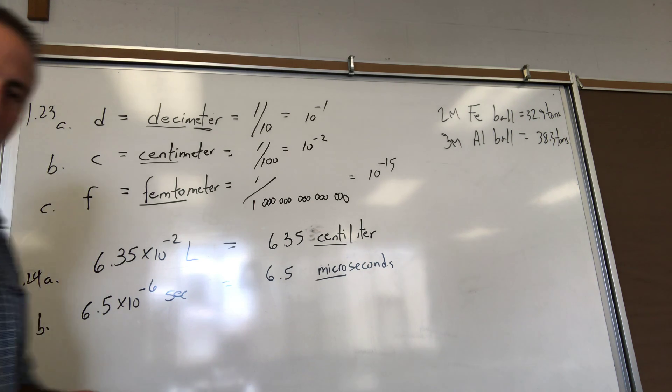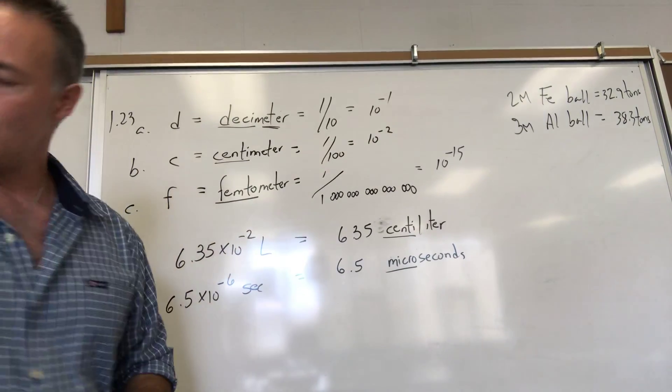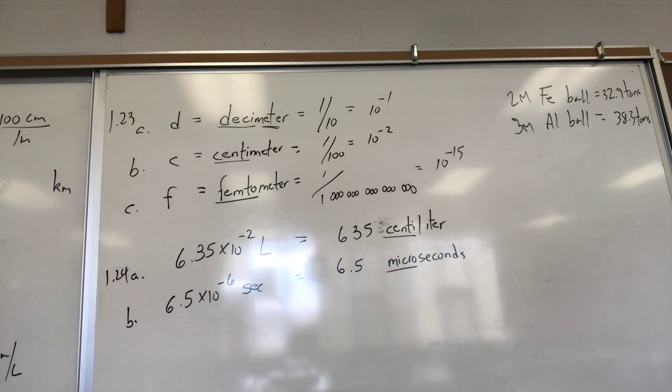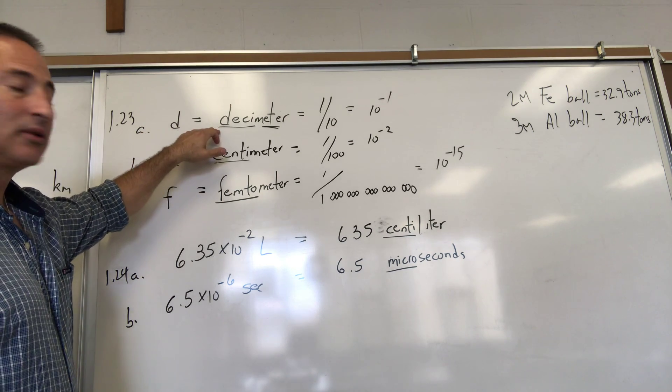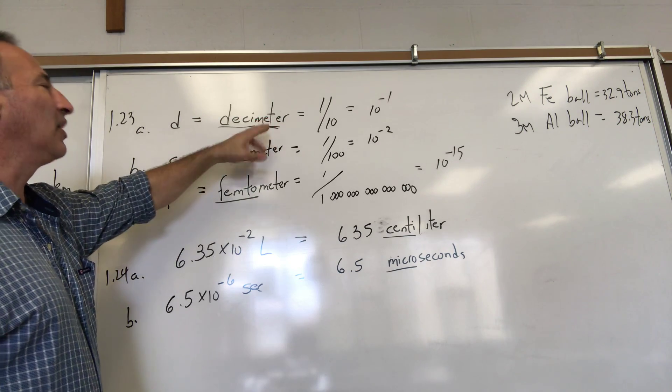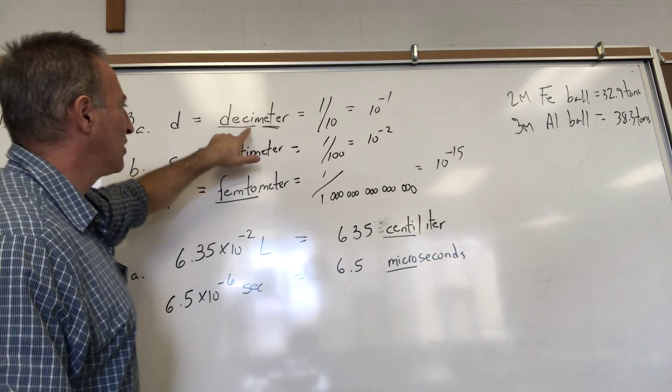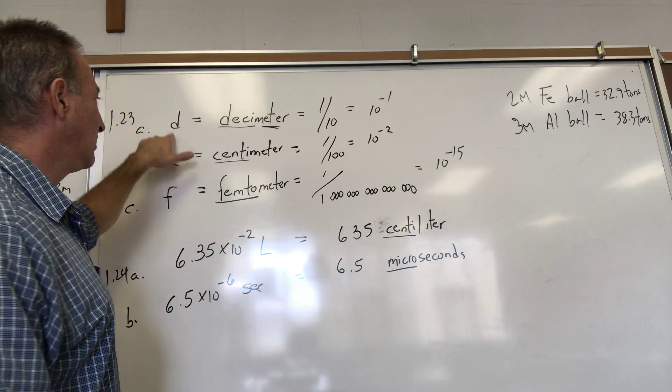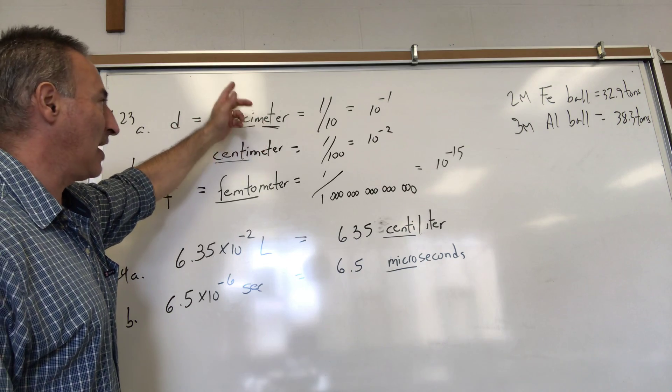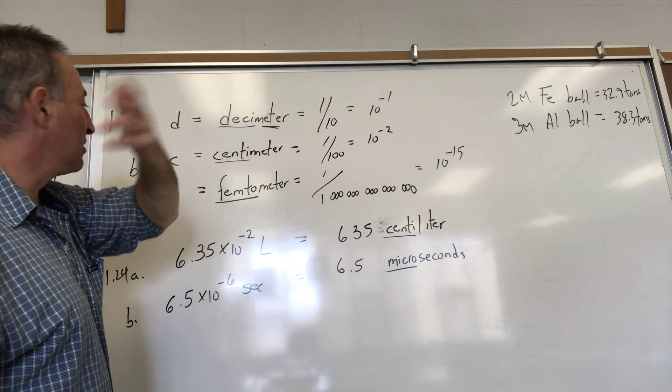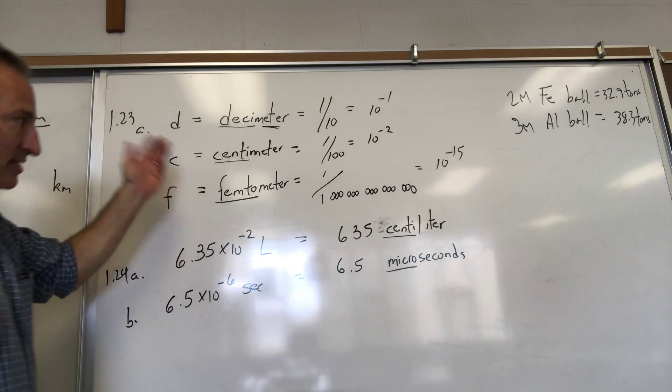To help you along, I did a couple questions on the board. On 123 it asks what decimal power do the following abbreviations represent. First one is d, lowercase d. That means decimeter. The d stands for deci which means one tenth. You could put any unit you want there.